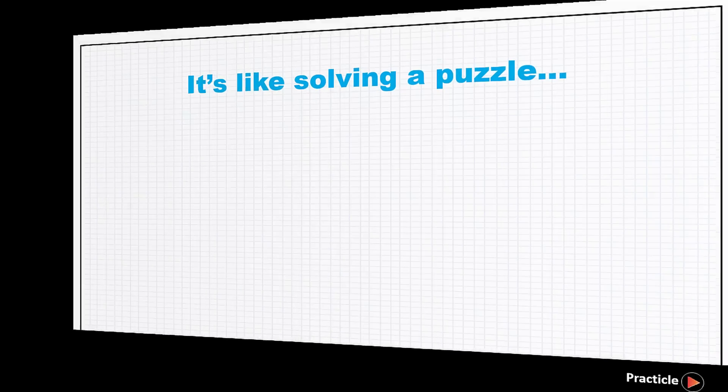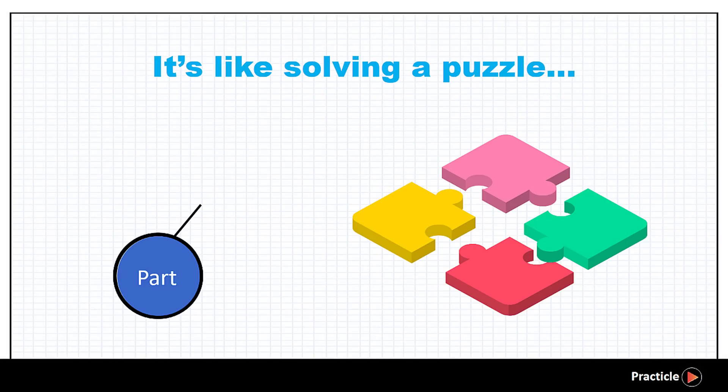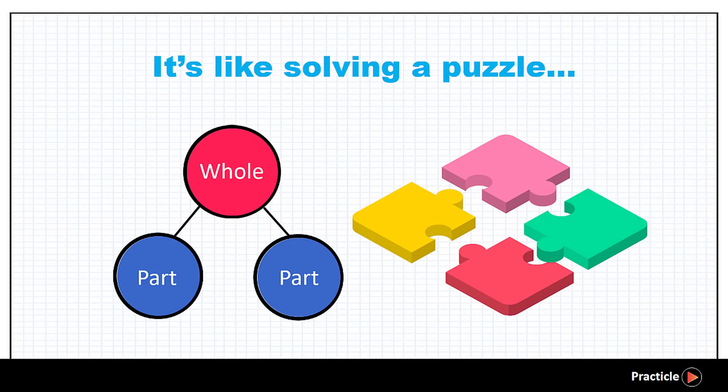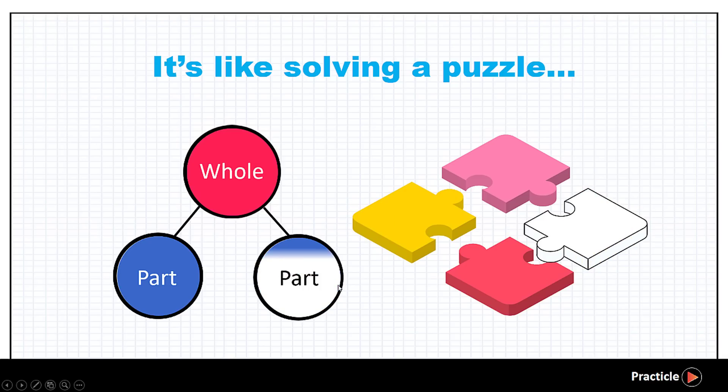So it's kind of like solving a puzzle. If we have all the pieces of a puzzle, we can add them up to form the whole picture. But if we want to have the whole picture, and we only have one part of the puzzle, we need to find the other missing part to complete the picture. Correct?